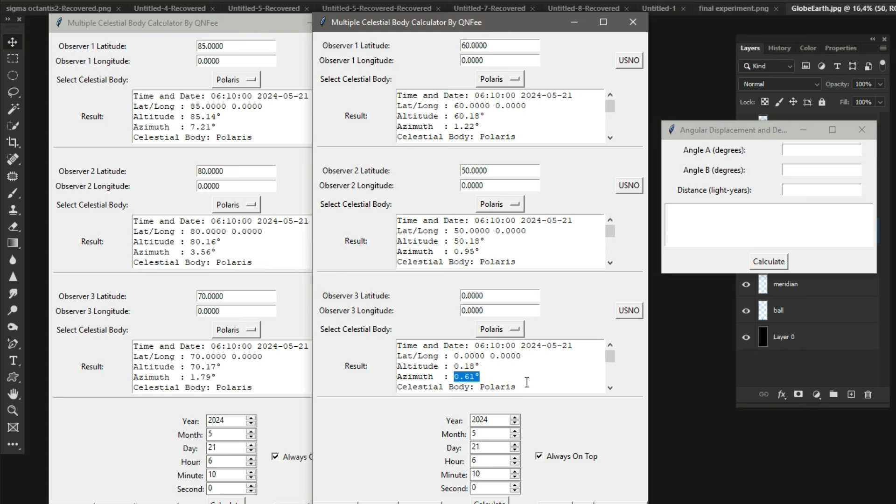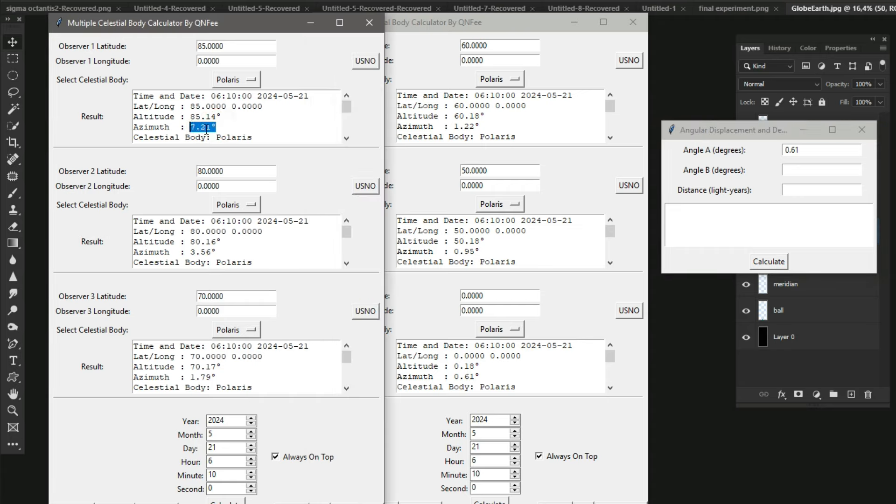And now we can calculate the angular deviation. This was 0.61 degrees, 0.63 degrees, and for the 85th latitude north it was 0.71 degrees. And Polaris is 430 light years away.